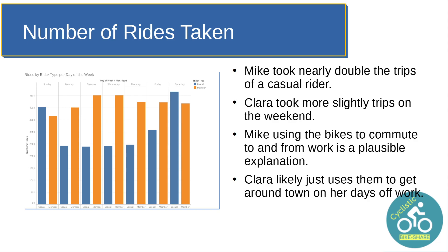That two-to-one number of rides tells me that Mike is probably using this to commute to work. You'll see him coming out of his apartment in downtown Chicago with his work clothes in hand, grabbing a bike, riding to work through traffic — probably going faster because he's smaller — arriving at work, showering, putting his work clothes on, and going about his business. When he's done for the day, he changes back into cycling clothes, bikes home, and is done with the day. Clara probably just uses the bikes to get around town on her days off, mostly on the weekend, maybe occasionally during the week.